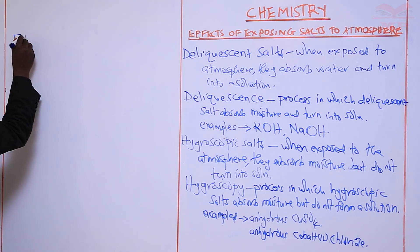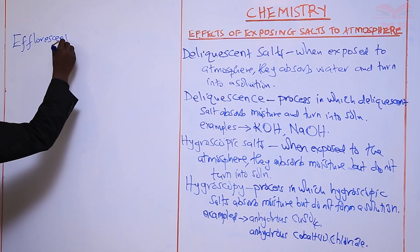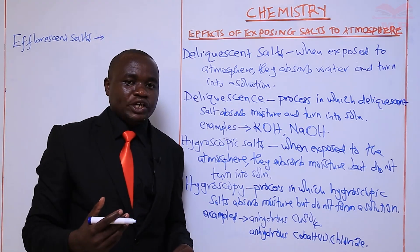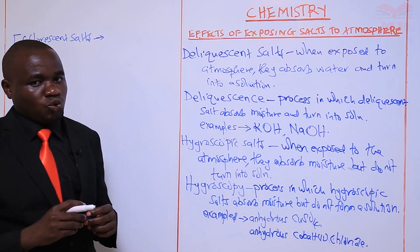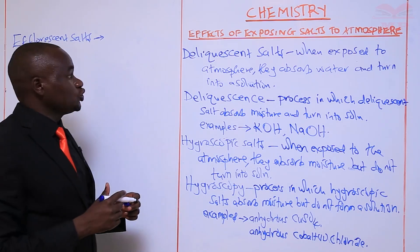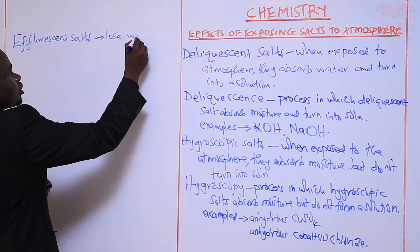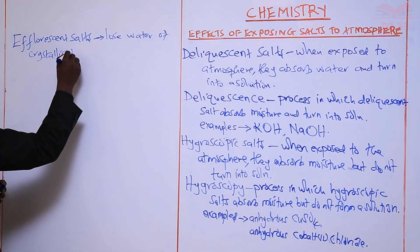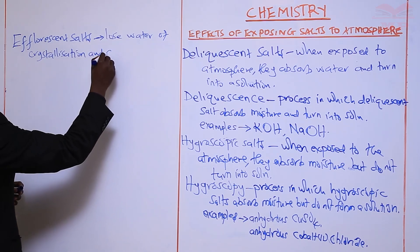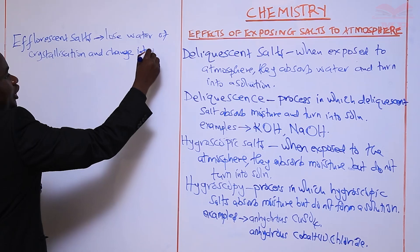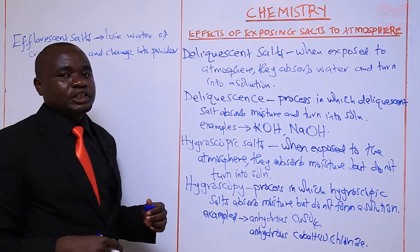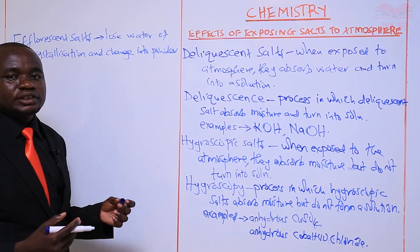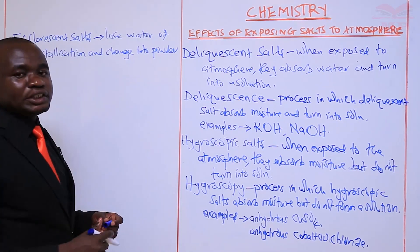The last category of salts we call efflorescent salts. Efflorescent salts are salts which, when exposed to the atmosphere, they lose water of crystallization and turn into powder. So this category loses water of crystallization and changes into powder.